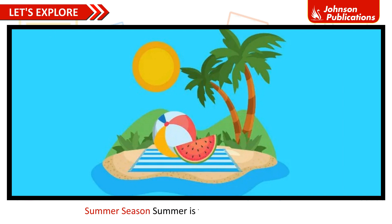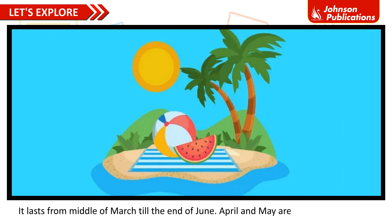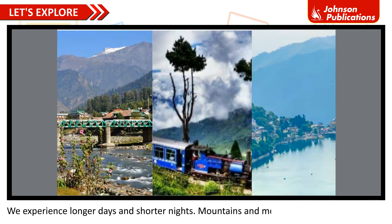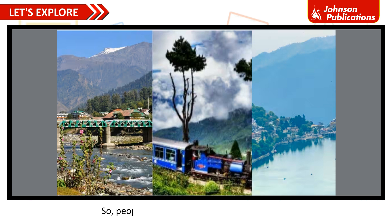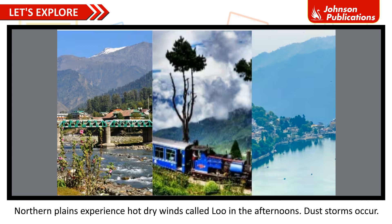Summer is the hottest season in India. It lasts from the middle of March till the end of June, with April and May being the hottest months. We experience longer days and shorter nights. Mountains and mountain regions remain cool, so people visit hill stations to escape the heat. Northern plains experience hot dry winds called loo in the afternoons, and dust storms occur.